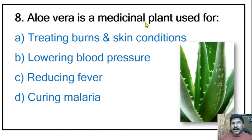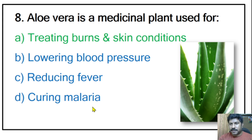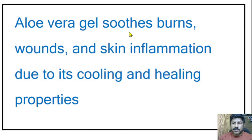Eighth question: aloe vera is a medicinal plant used for treating burns and skin conditions, lowering blood pressure, reducing fever, or curing malaria? The correct answer is treating burns and skin conditions. Aloe vera gel soothes burns, wounds, and skin inflammation due to its cooling and healing properties.